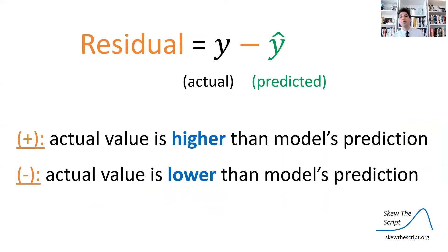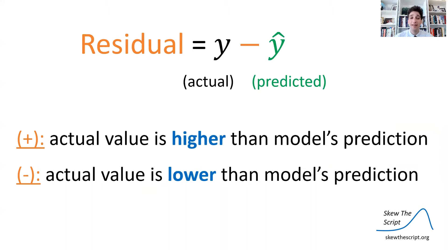Note: because of the order of subtraction — actual minus predicted — if you get a positive residual value, the actual data value is higher than the model's prediction; the data point is above the least squares regression line. If you get a negative residual value, the actual value is lower than the model's prediction — the data point is below the least squares regression line.